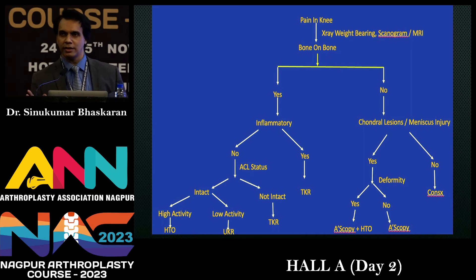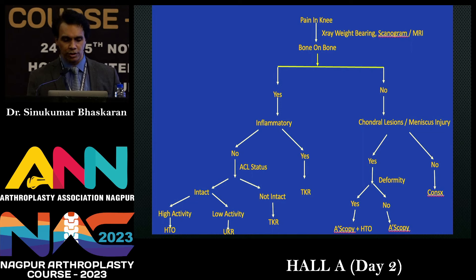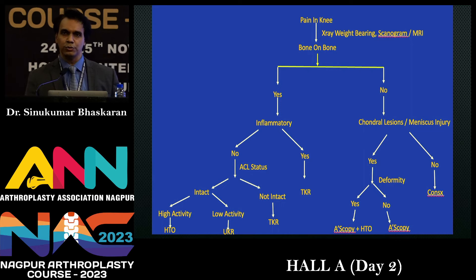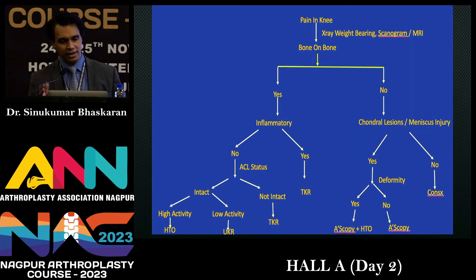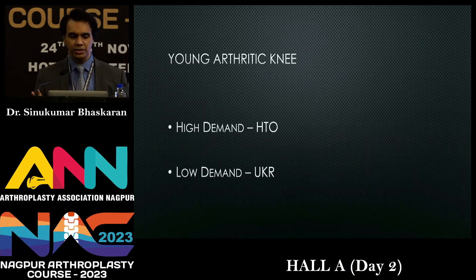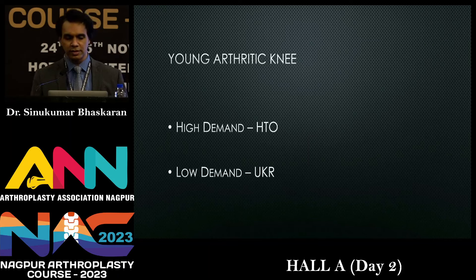If there is deformity on the scanogram, give them arthroscopy plus HTO; if no deformity, just arthroscopy. If there is bone-on-bone, check lab markers: if inflammatory pathology is present, the patient needs a total knee. If inflammatory markers are negative and RA factor is negative, check ACL status — if ACL is not intact, the patient gets a TKR. If ACL is intact in a young patient with negative inflammatory markers, check activity levels: high demand gets HTO, low demand gets a unicompartmental knee.